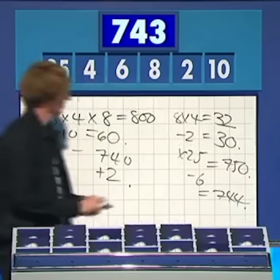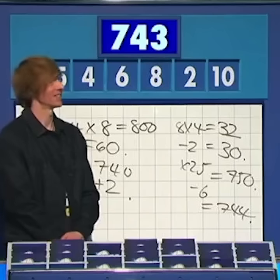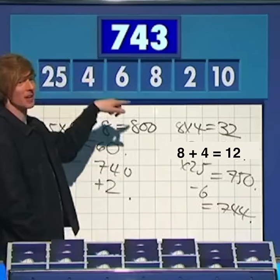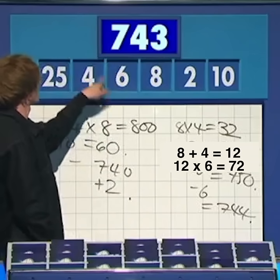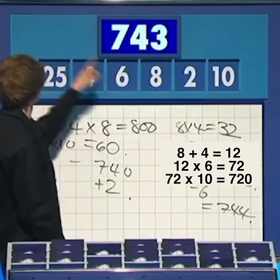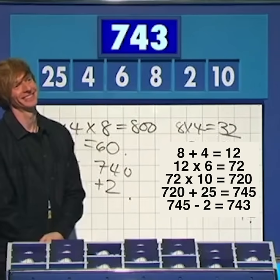So you're having to deal with one either way while at the same time trying to get in the middle. Have you managed it? 8 plus 4 gives you 12, times 6 for 72, times 10 is 720, plus 25 minus 2: 743.